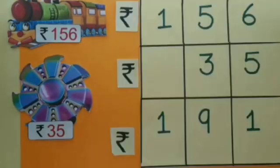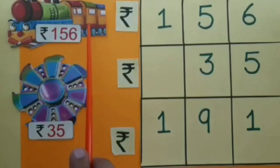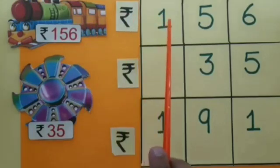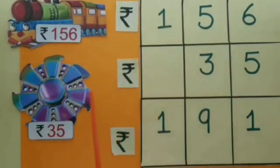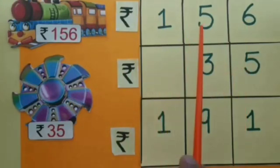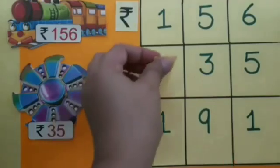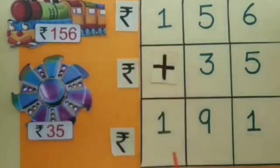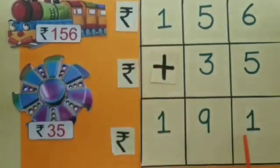Now we will see how we can solve this sum in written form. The cost of toy train is rupees 156 and the cost of spinner is rupees 35. We will add both amounts and the total amount will be rupees 191, which she will pay to the shopkeeper.